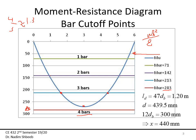If I want to cut bars at the inflection points, instead of calculating Mn/Vu + La each time, I go to the inflection point and move a distance of d or 12db — whichever is larger. In this case, d = 439.5 mm controls, so I move 440 mm from the inflection point, drop down, then go back the development length Ld.